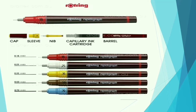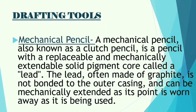The technical pen has sizes: 0.18, 0.25, 0.35, 0.50, and 0.70 — from thin to thick. Next is the mechanical pencil, also known as the clutch pencil. This is a pencil with a replaceable and mechanically extendable solid pigment core called a lead, often made of graphite, bonded to the outer casing that can be mechanically extended as its point is worn away.